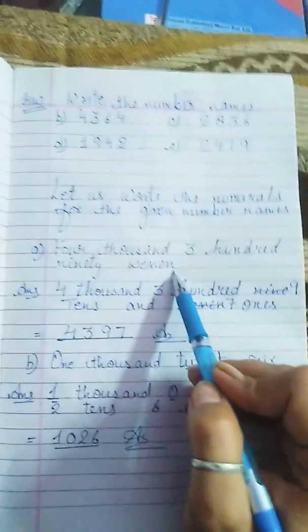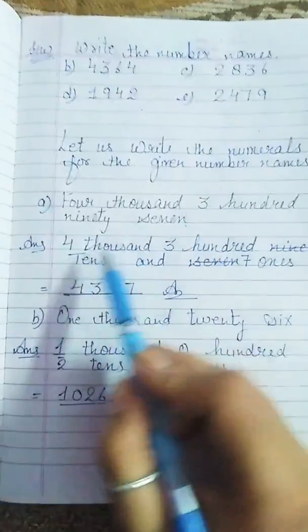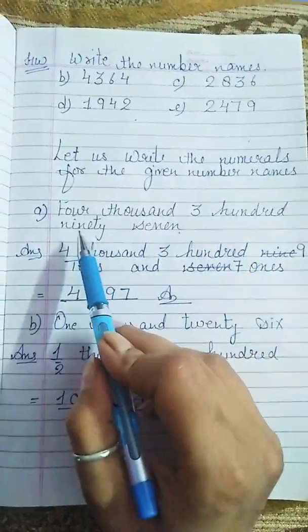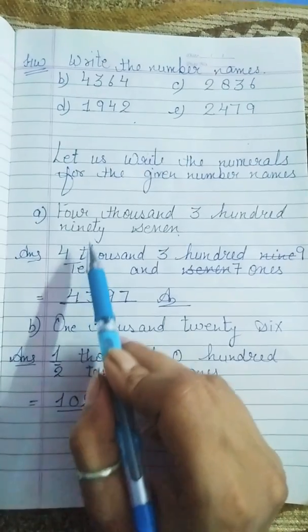Yani, aapko spelling dehe rakhi, aapko uska number banane hai. Okay? Now, four thousand, three hundred, ninety seven.